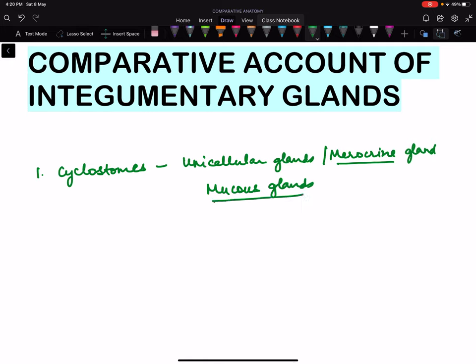Different types of unicellular glands are mucus glands which are present in cyclostomes. They are goblet cells, granular gland cells, and beaker cells. These three glands are a type of mucus glands.